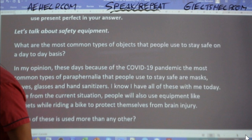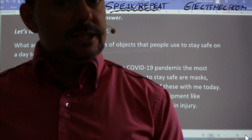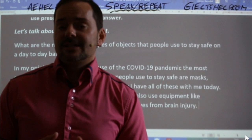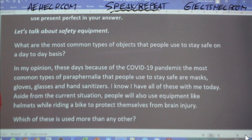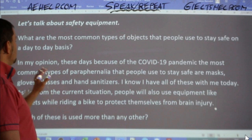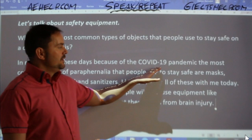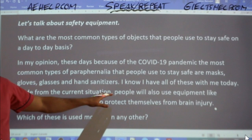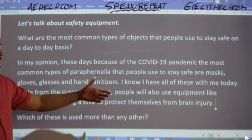Some nice answers. As long as you're fluent, you can give a long answer like this. If you're having difficulty being fluent, keep your answer a little shorter so the examiner does not interrupt you. Repeat after me: 'In my opinion, these days, because of the COVID-19 pandemic, the most common types of paraphernalia that people use to stay safe are masks, gloves, glasses, and hand sanitizers. I know I have all of these with me today. Aside from the current situation, people will also use equipment like helmets while riding a bike to protect themselves from brain injury.'